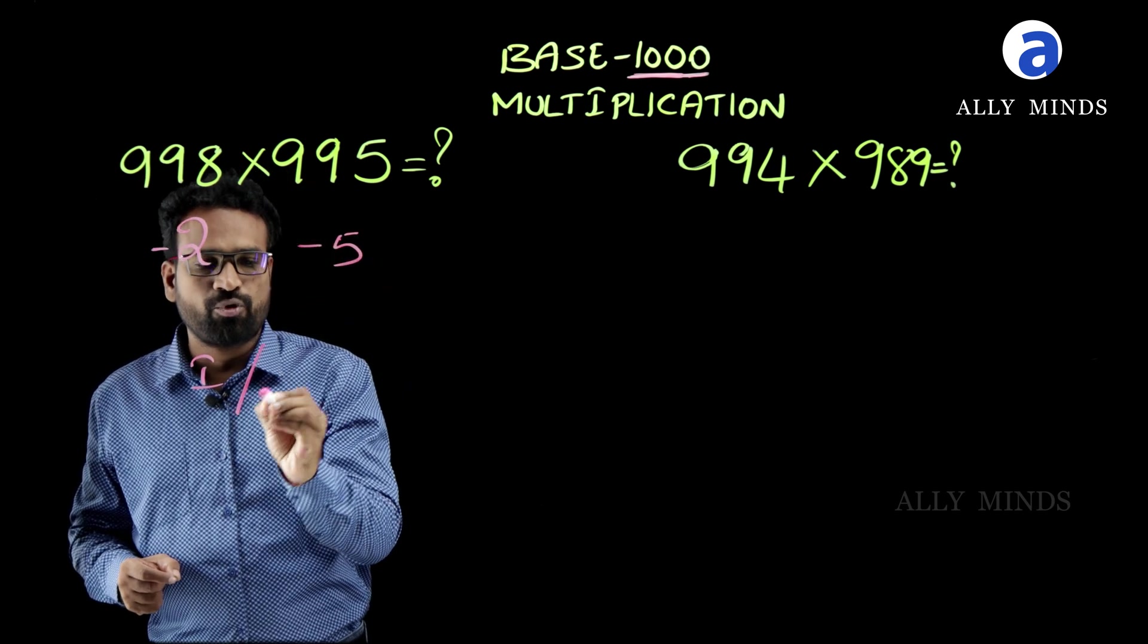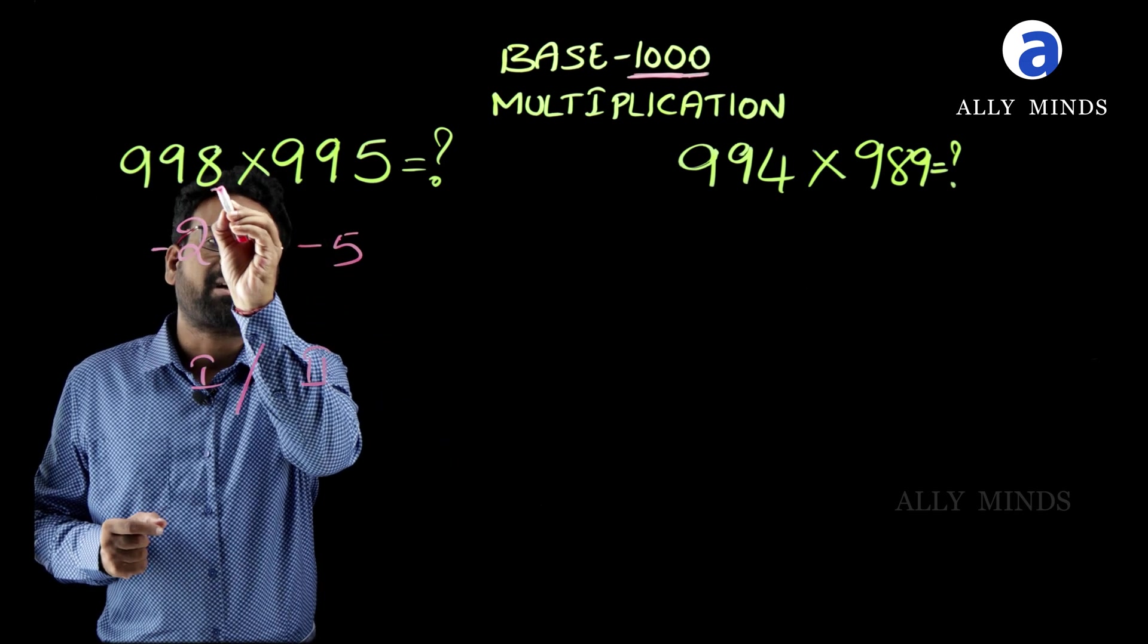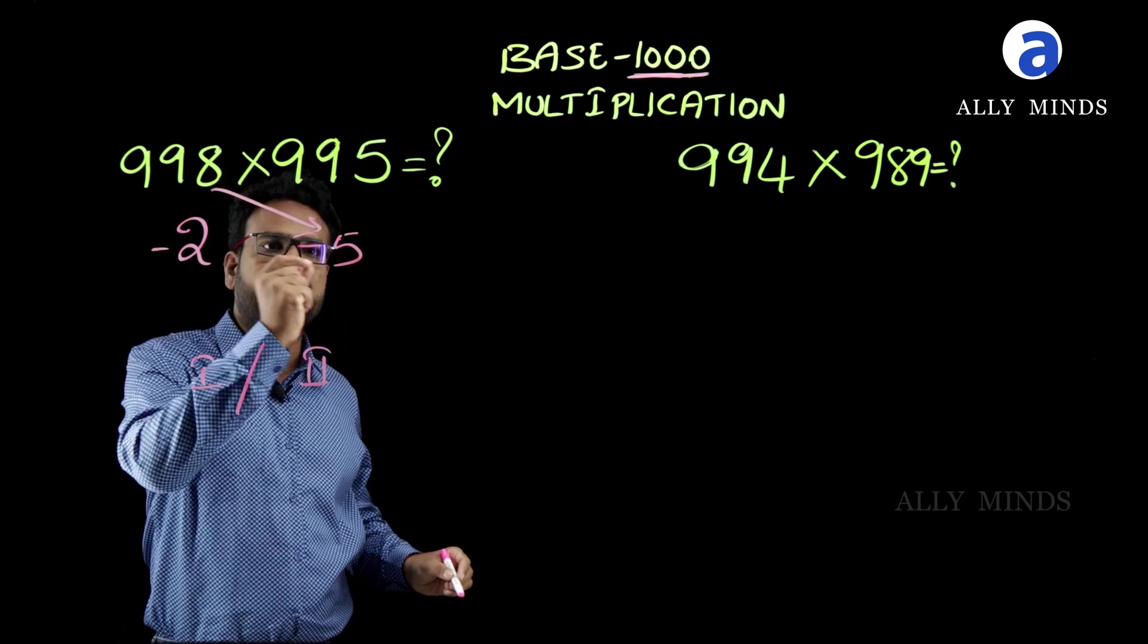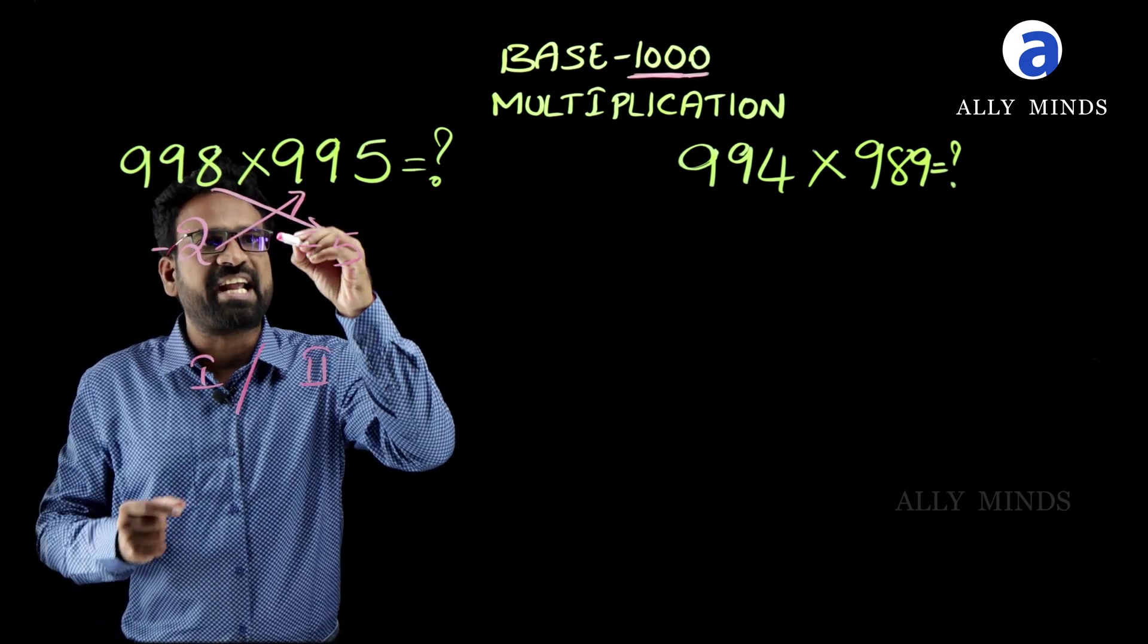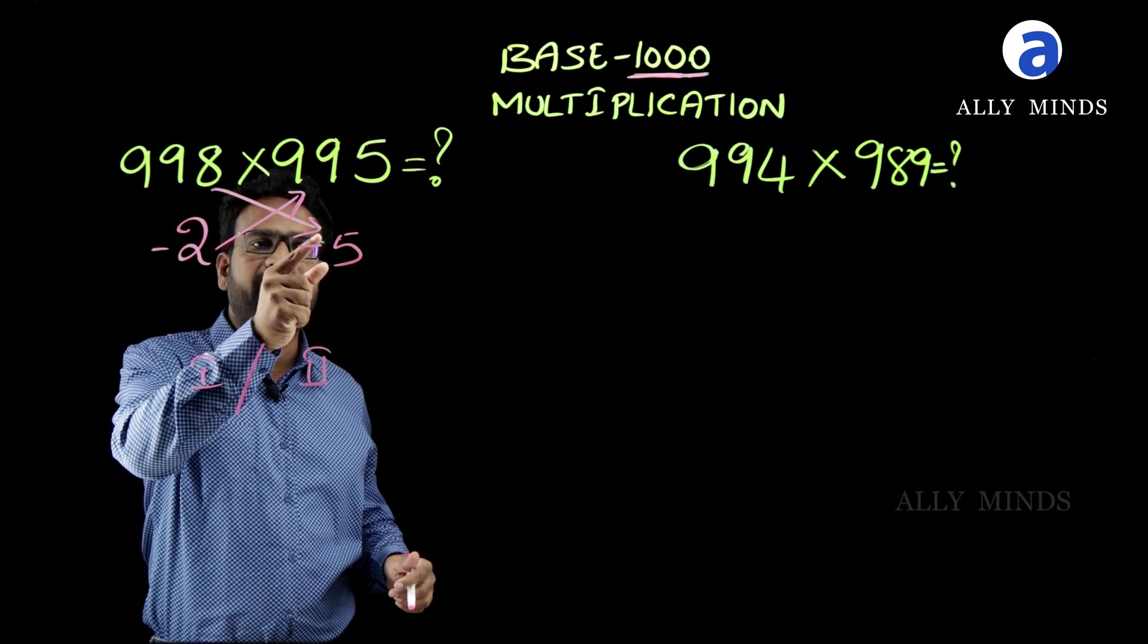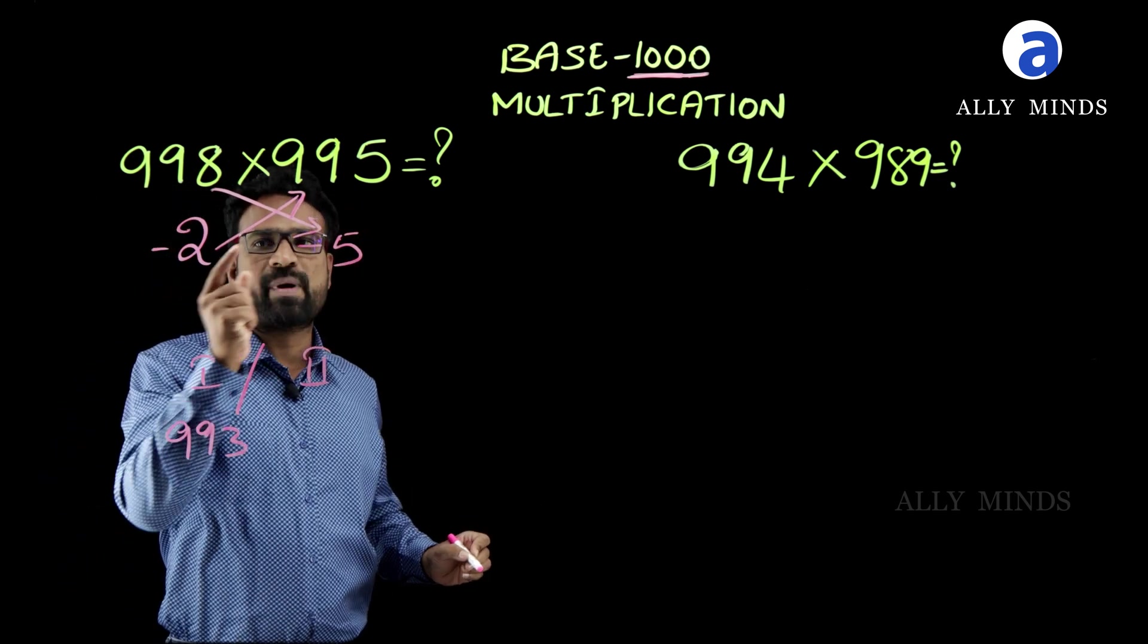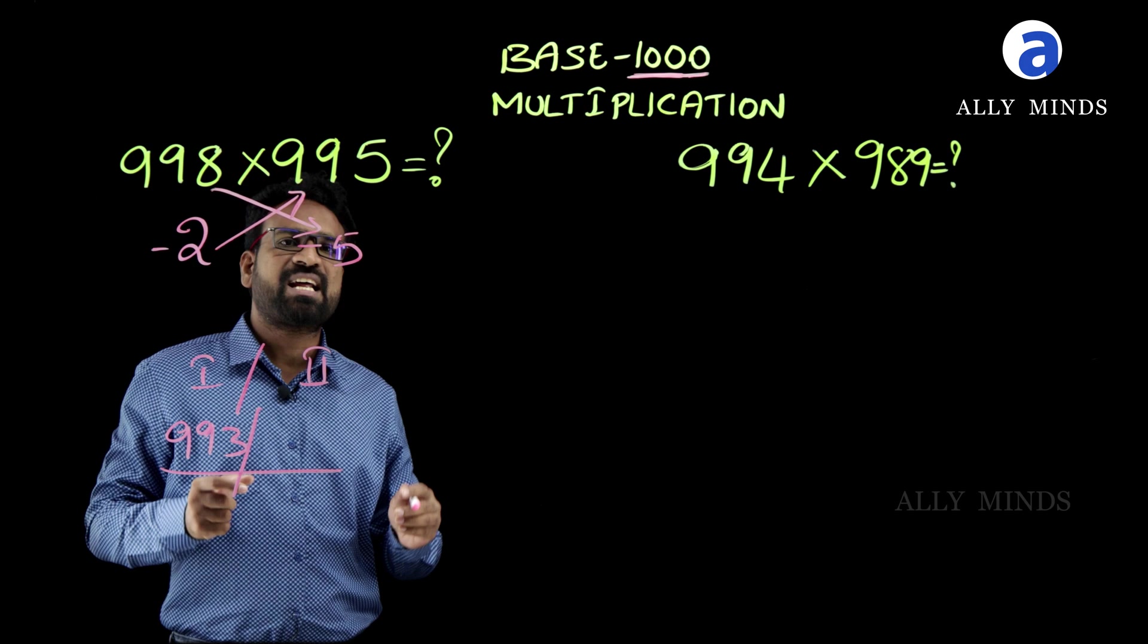We get this answer in two parts: first part and second part. For the first part, we have to apply the cross subtraction of 998 and 5, or cross subtraction of 995 and 2, which will give the same result. 998 minus 5 is 993, or 995 minus 2 is 993, which is the first part of the answer.